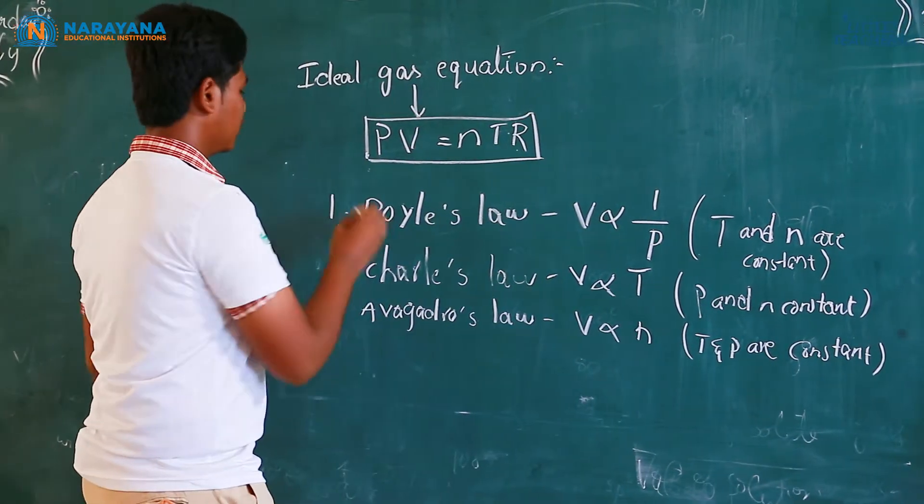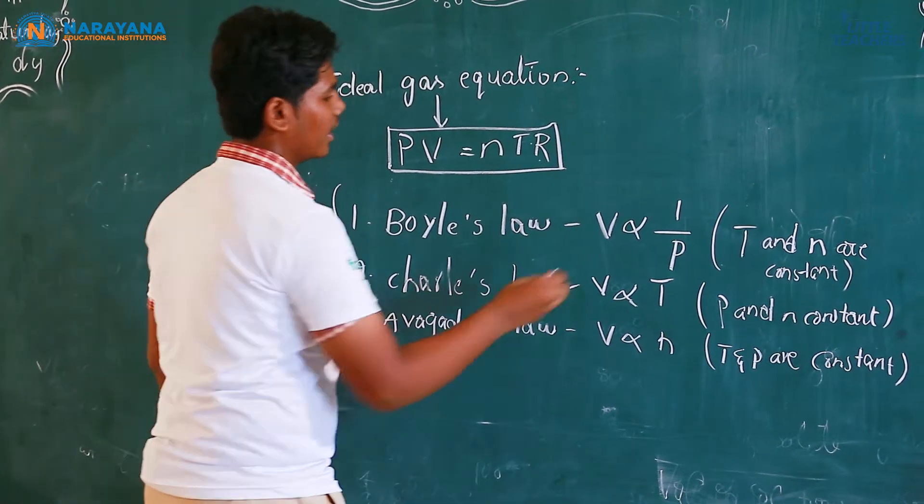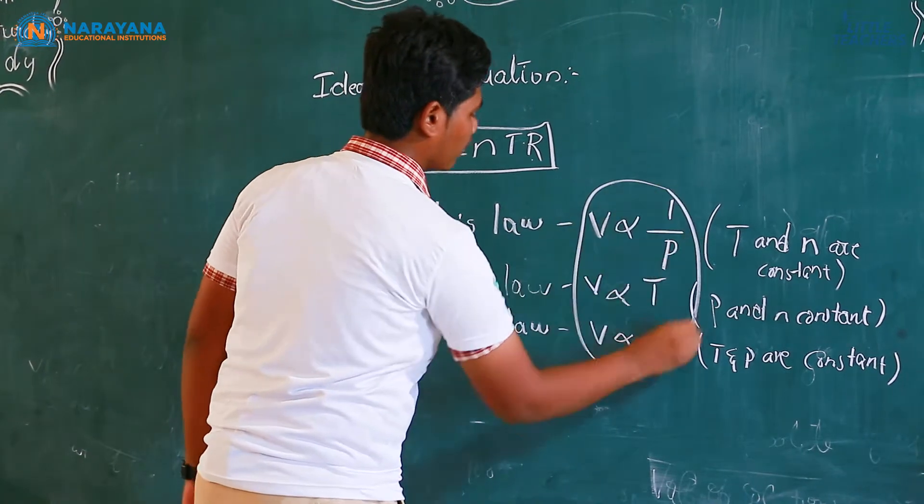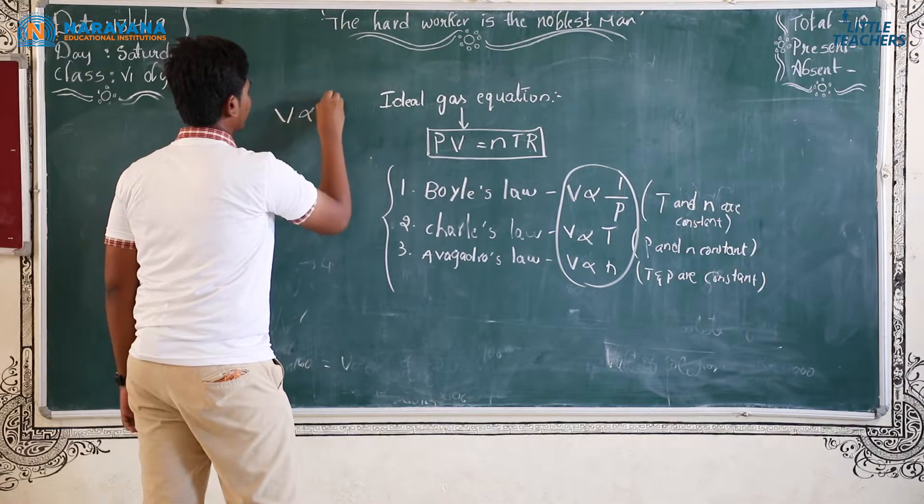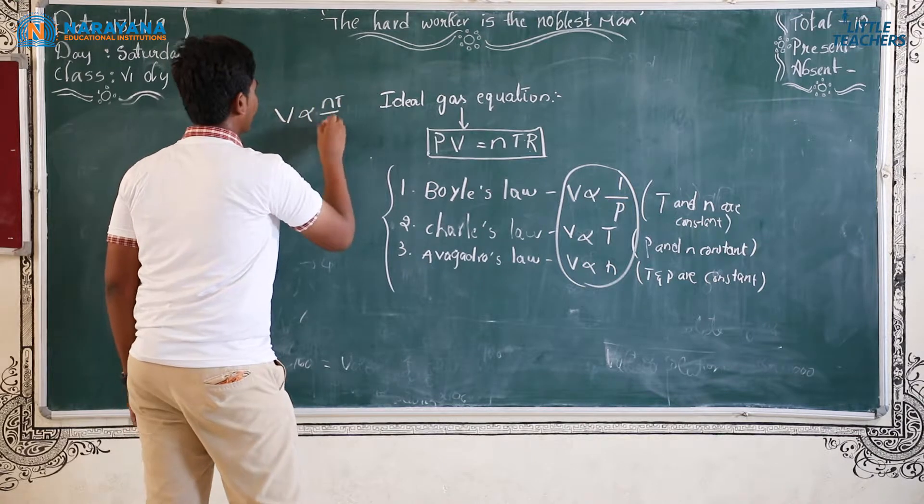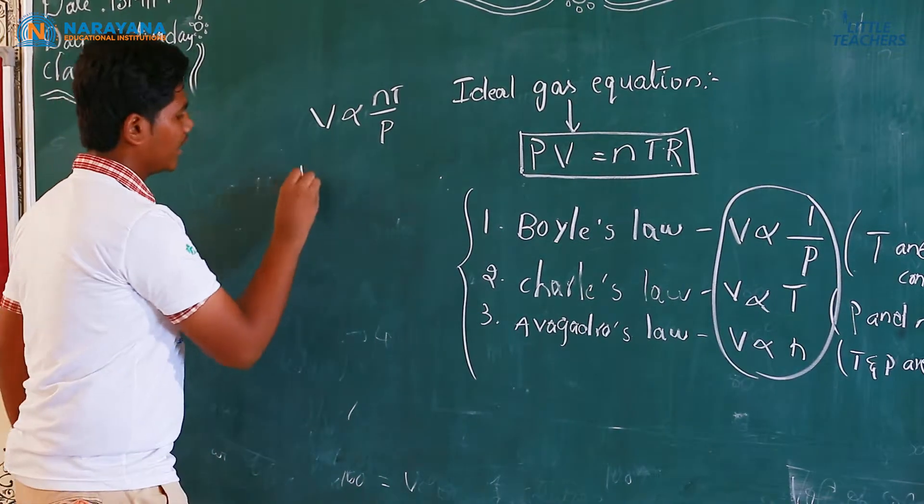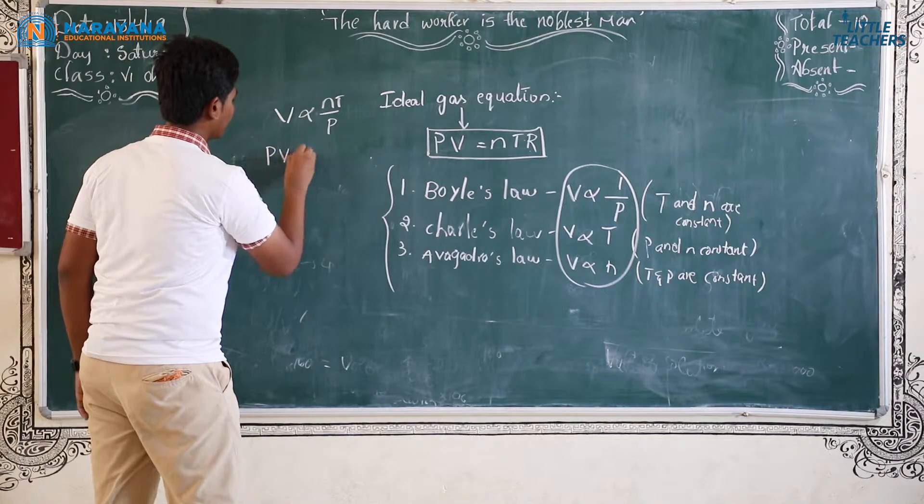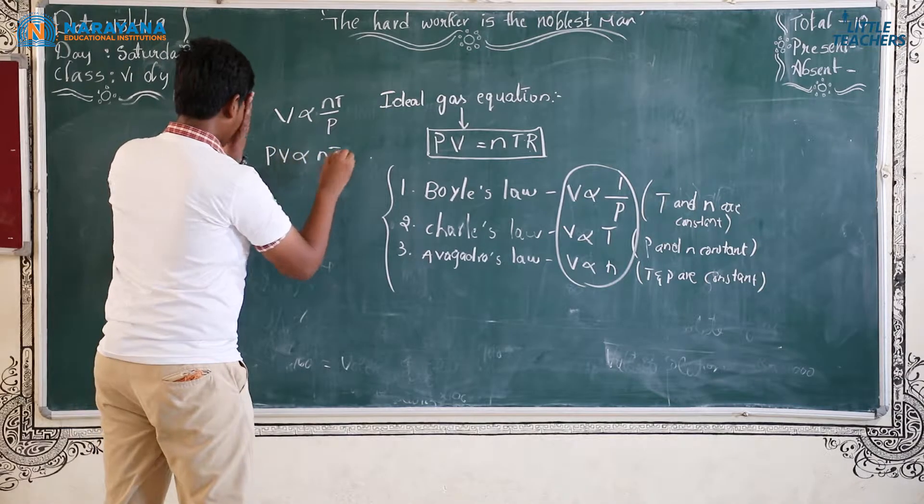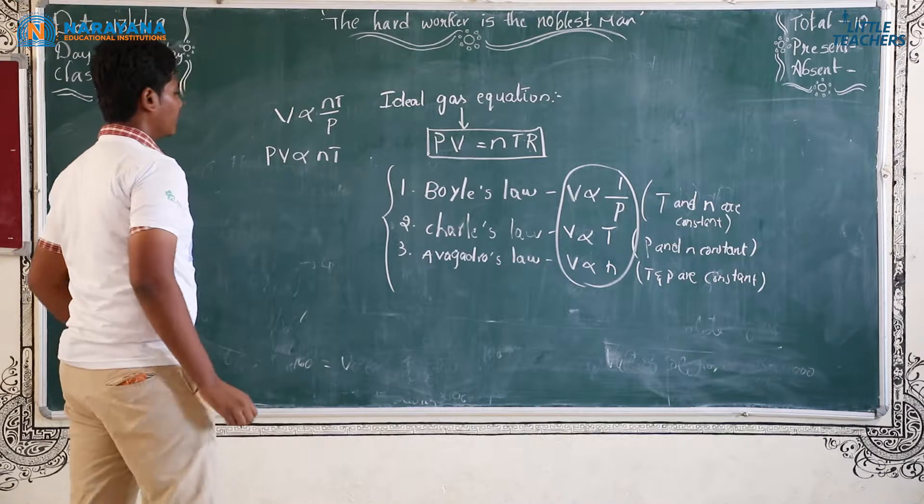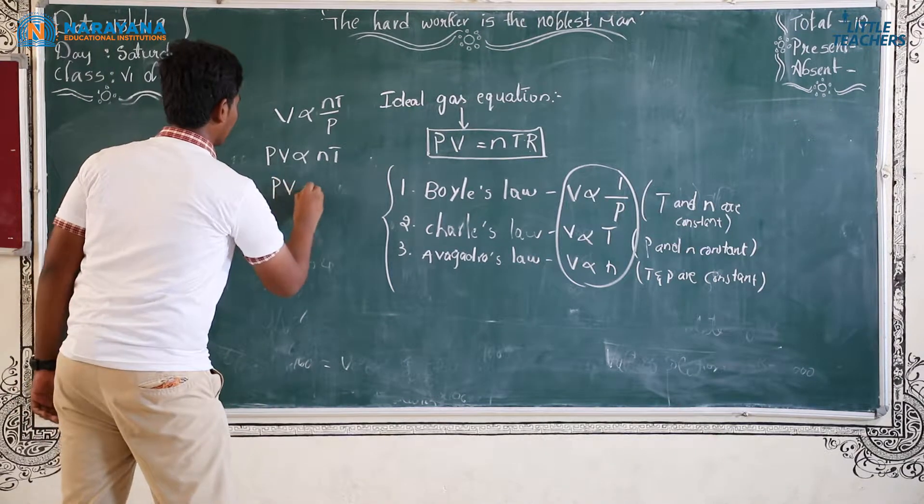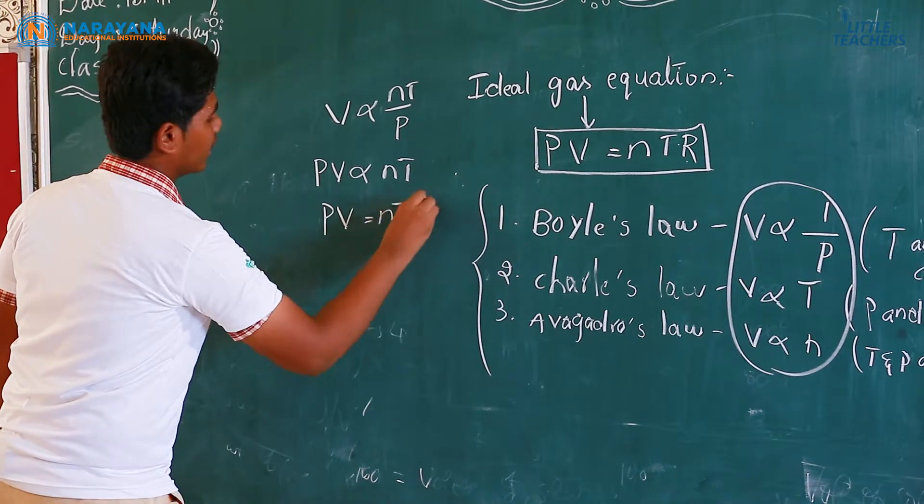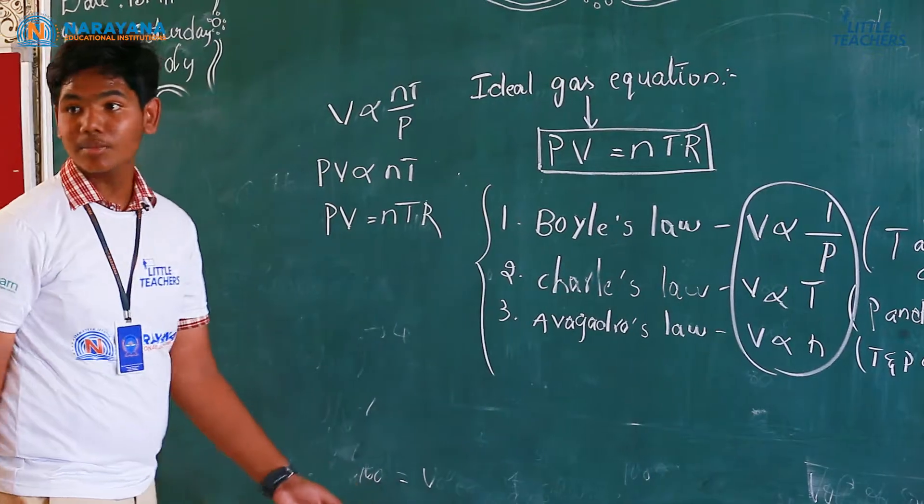By combining these all three equations and these three laws, we can get V is proportional to NT by P. When we send the pressure to the other side, we get PV is directly proportional to NT. If we multiply with constant, we can get PV is equals to NTR.